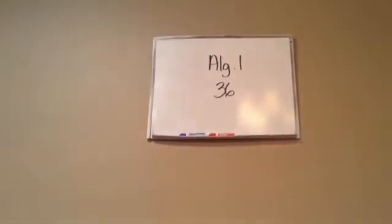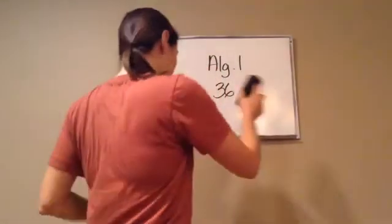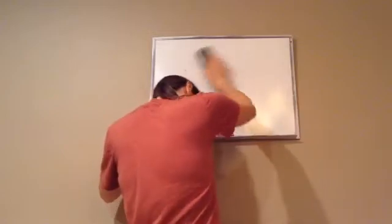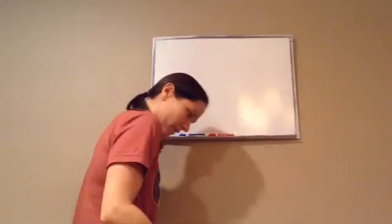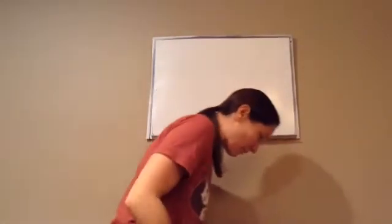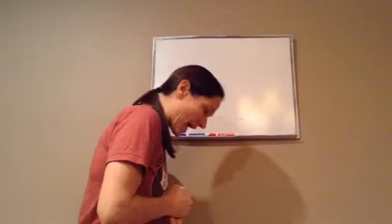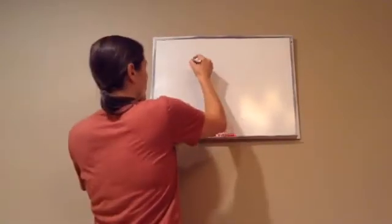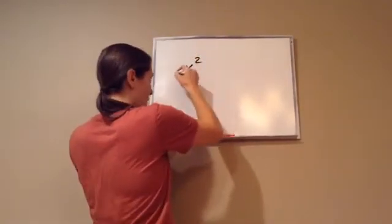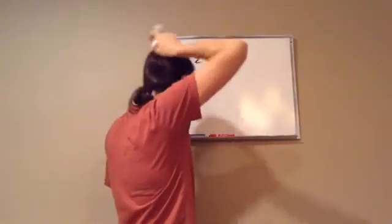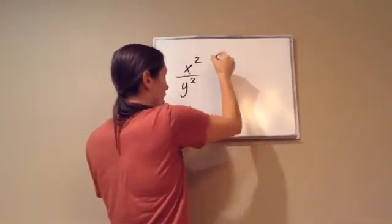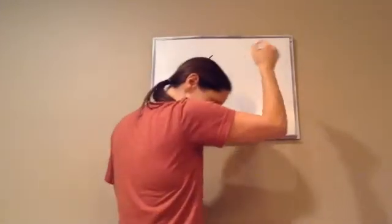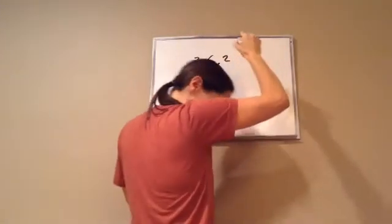Algebra 1, Lesson 36. This one is on the distributive property of rational expressions that contain positive exponents and then minus signs and negative exponents. So let's take what I just taught you. Remember how you found the greatest common factor of them? Now you're going to take and do the opposite version of it, which is we are going to do the distributive property.